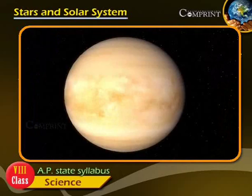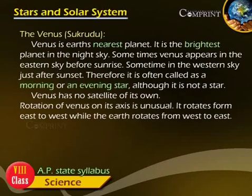Therefore, it is often called a morning or an evening star, although it is not a star. Venus has no satellites of its own.